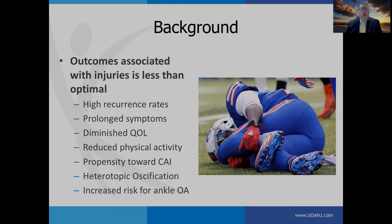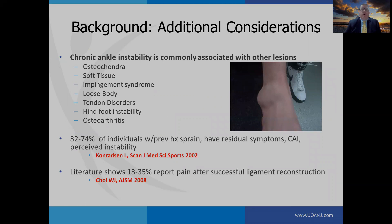There are less than optimal outcomes which oftentimes occur with ankle sprains: high recurrence rate, prolonged symptoms, diminished quality of life, reduced physical activity, and a propensity towards chronic ankle instability. There's an association with heterotopic ossification and increased risk for ankle osteoarthritis. Other lesions that can occur with ankle instability include injuries to the osteochondral, soft tissue, tendons, and osteoarthritis of the ankle.